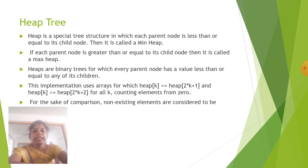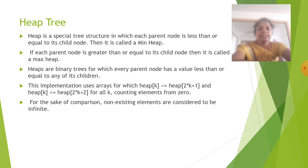The next is the heap tree. Heap is a special tree structure in which each parent node is less than or equal to its child node. Then it is called a min heap. If each parent node is greater than or equal to its child node then it is called as max heap. Heaps are binary trees for which every parent node has a value less than or equal to any of its children. This implementation uses arrays for which heap[k] <= heap[2*k+1] and heap[k] <= heap[2*k+2] for all k counting elements from 0. For the sake of comparison, non-existing elements are considered to be infinite.